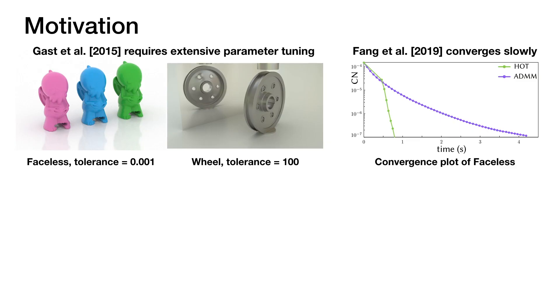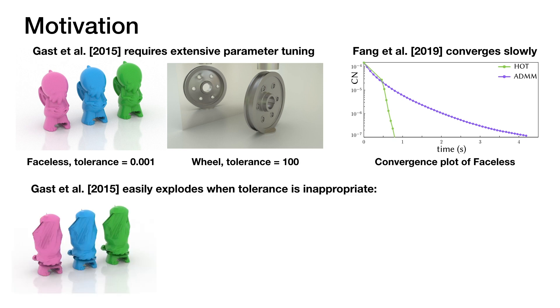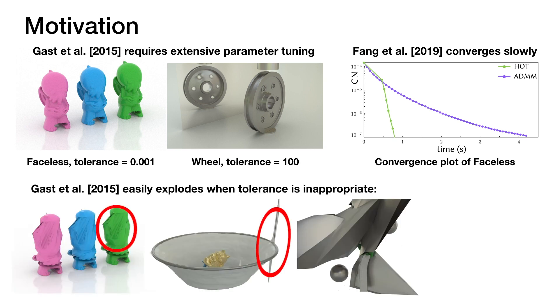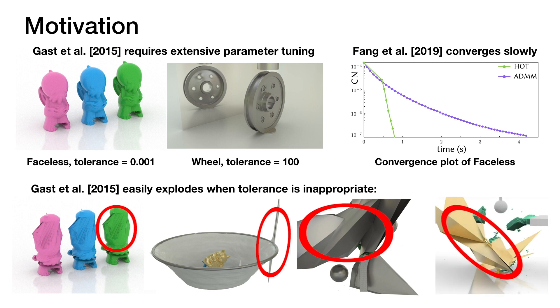The state-of-the-art implicit MPM methods that support large time steps require extensive parameter tuning and can converge very slowly. Since they are especially designed for soft materials, for stiff or heterogeneous materials they can result in either extremely slow performance or instability and even explosion if inappropriate parameters are used.